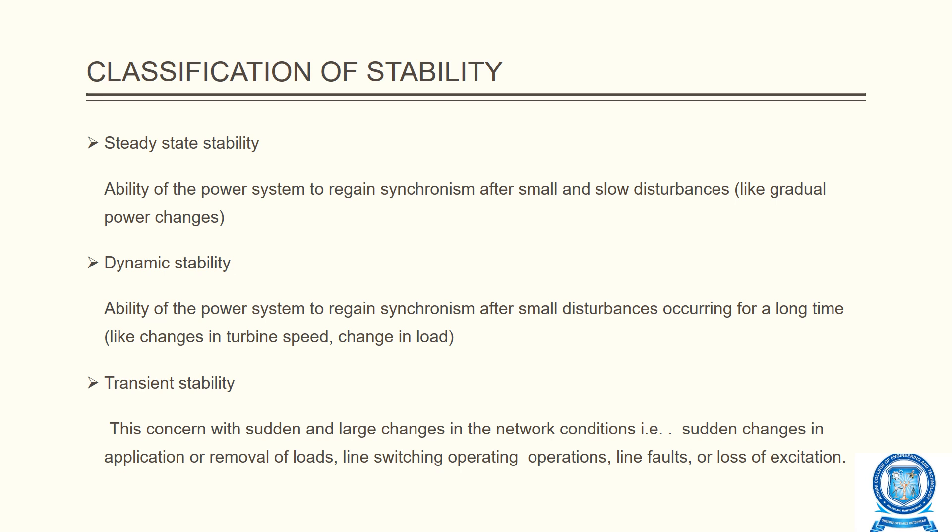To summarize the difference: steady state stability is for a short duration, while dynamic stability is maintained over a long time. The third type is transient stability. Transient stability is defined as the ability of a power system to retain stable operation when it is subjected to large disturbances. Examples include sudden changes in application or removal of load, line switching operations, line faults, and loss of excitation.